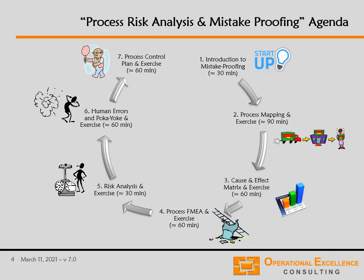Step four, we're going to start looking at the process FMEA, or process failure mode and effects analysis. The process FMEA has a risk analysis integrated, and we're going to discuss that in section five. After that, we're going to drive improvements in the process by addressing human errors — discussing the 16 human error modes and the six mistake proving principles, and how we can apply them to improve our process and address risks identified in the process FMEA.